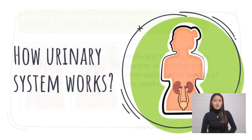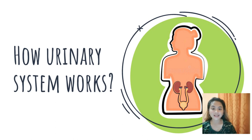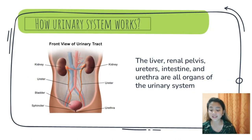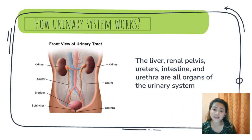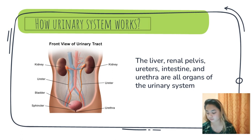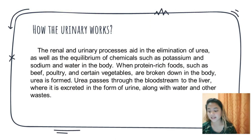For the discussion of how the urinary system works, we have Emery Milyar. The urinary system's function is to filter blood and create urine as a waste product. The renal and urinary process aid in the elimination of urea as well as the equilibrium of chemicals such as potassium, sodium, and water in the body.